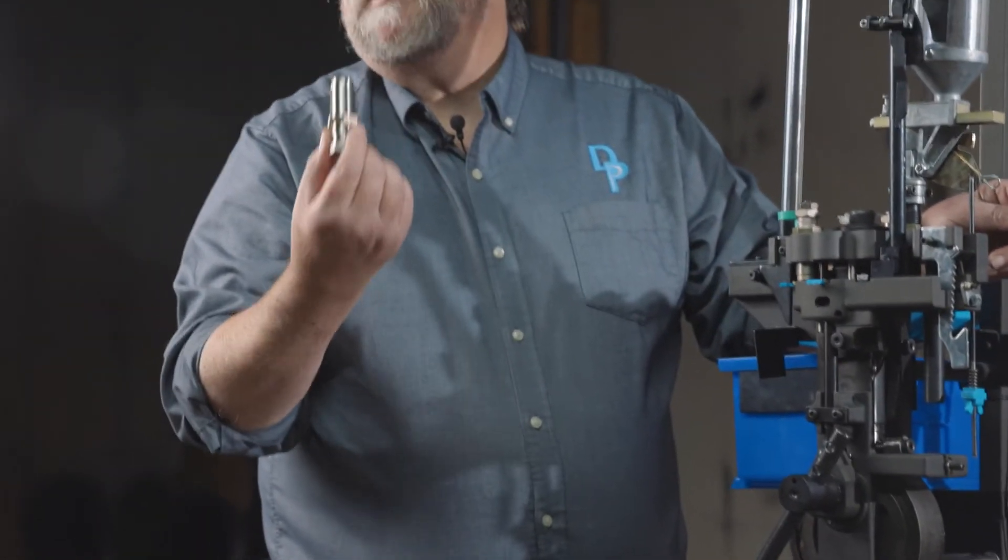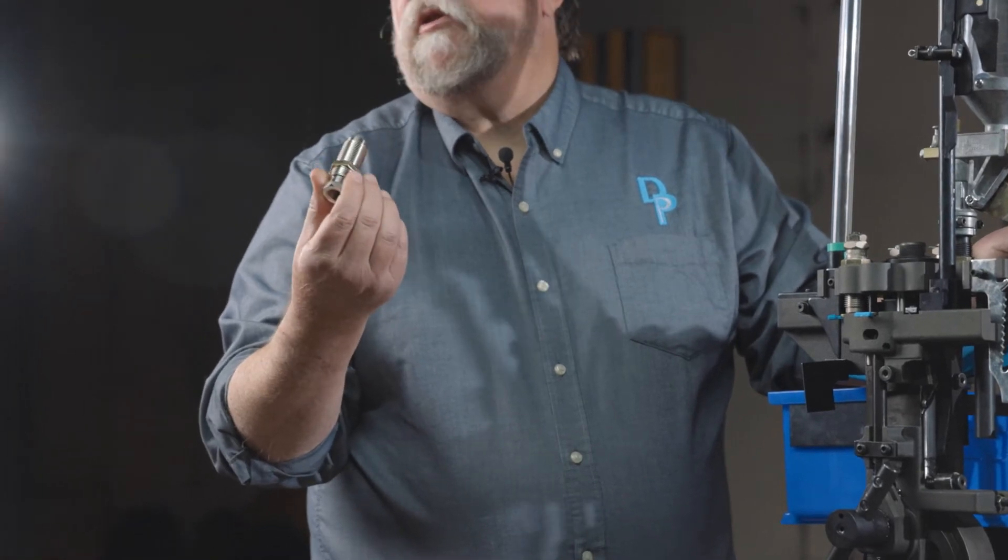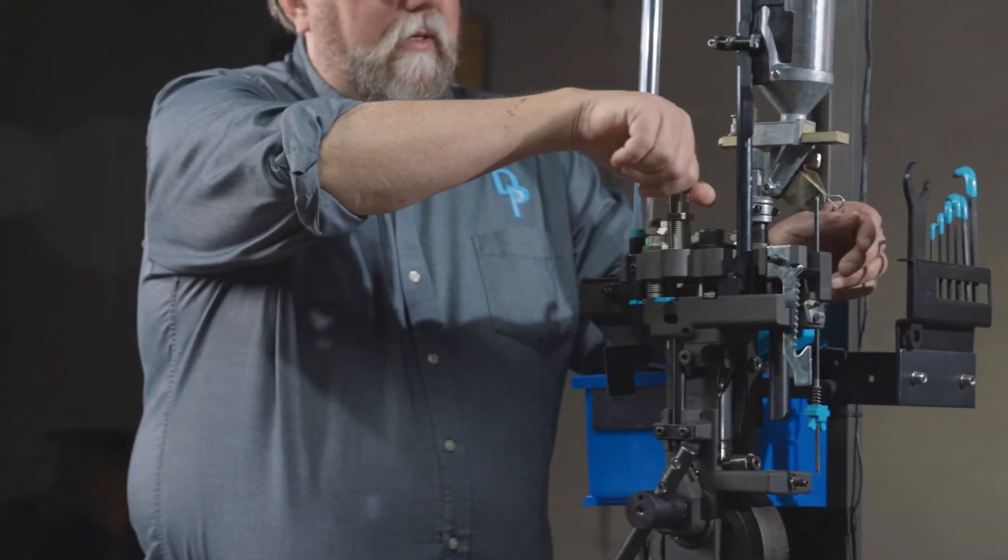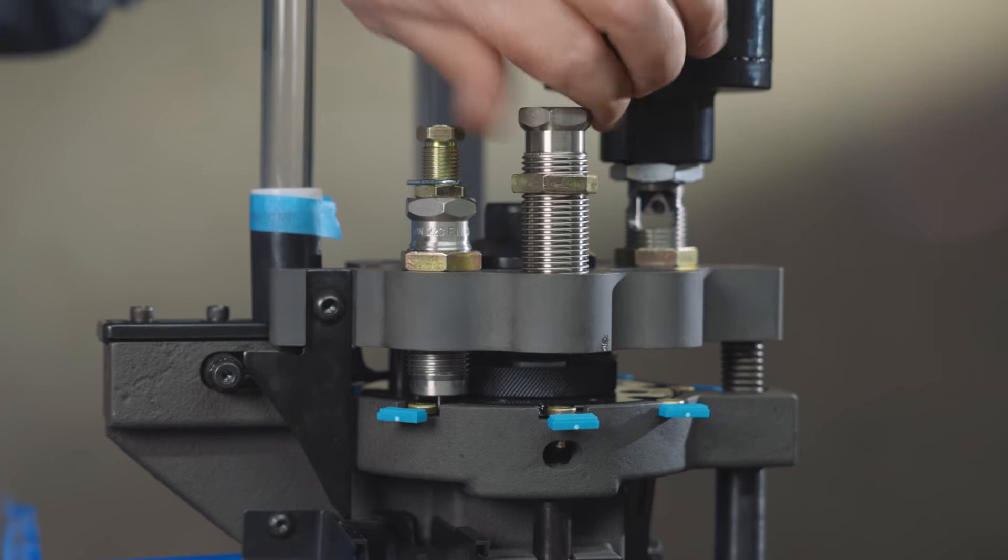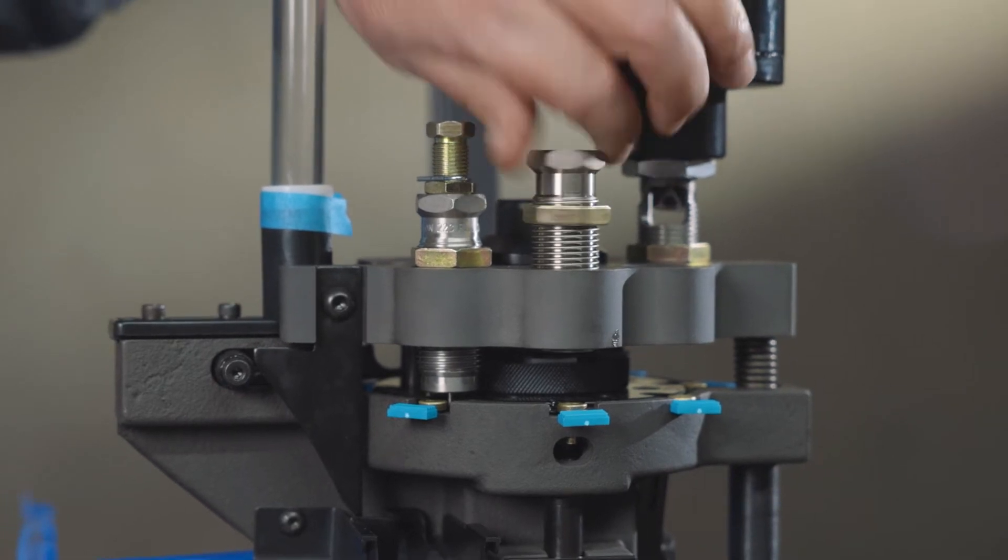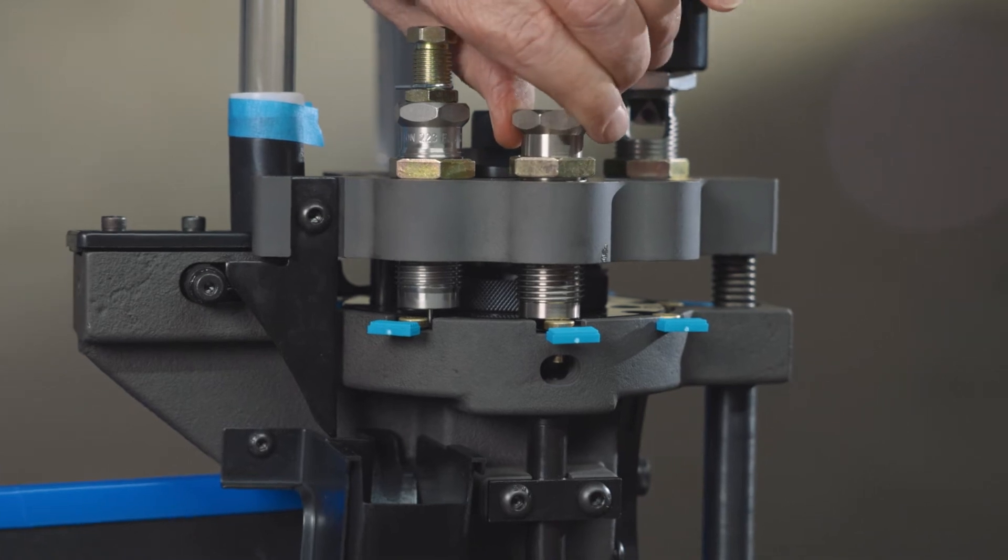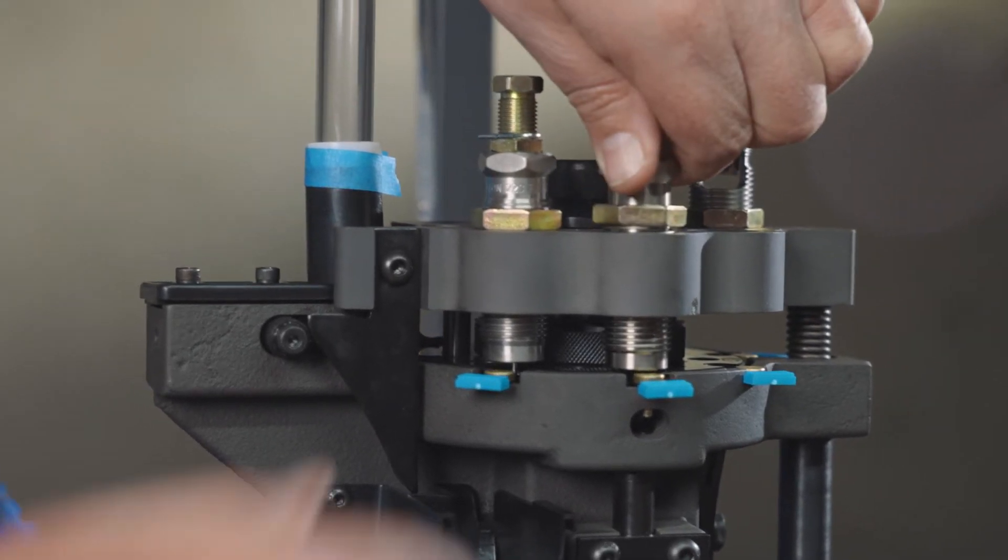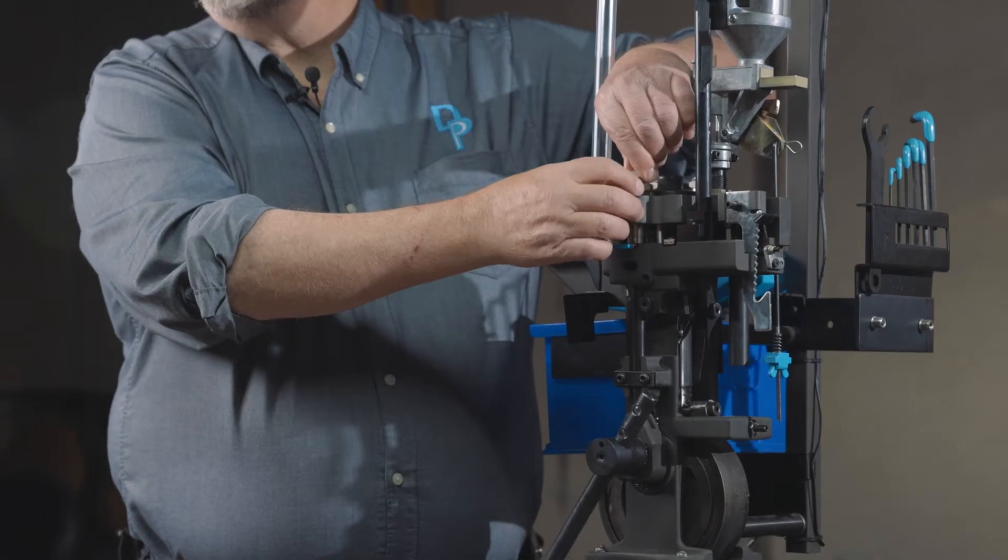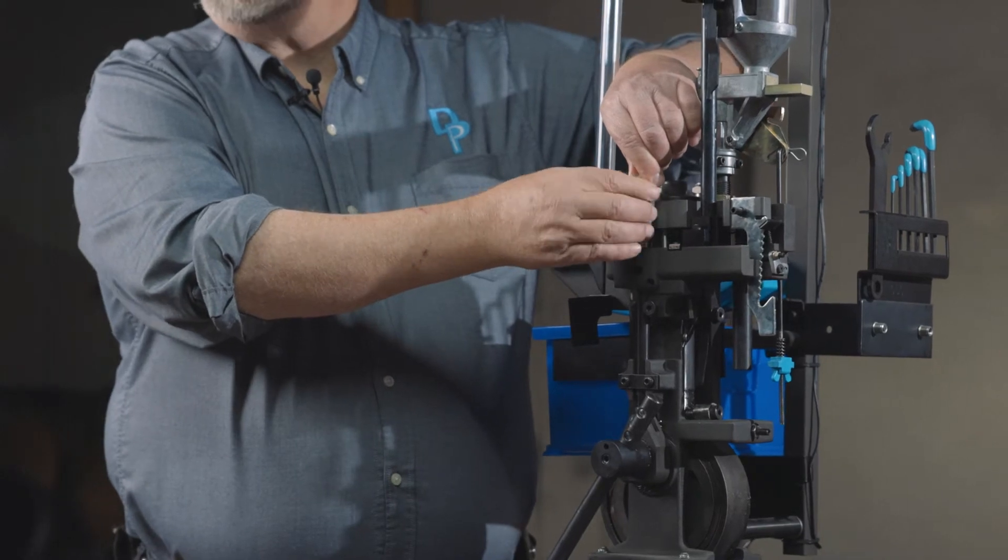Second, you have the die body and basically it's just a threaded hole. Thread this die into the toolhead at the swage station until it touches the shell plate, then back it up maybe a quarter turn, just enough so it doesn't impact the top of the shell plate.